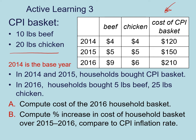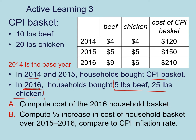I want to remind you that we care about the base year, and in this case the base year is 2014. Now, according to the scenario, in 2014 and 2015 households bought the CPI basket. But in 2016, households bought a different combination of chicken and beef. As you would have noticed up here on the top, the prices of beef increased significantly more than the prices of chicken from 2015 to 2016, so households changed their behavior by buying a different combination of beef and chicken.